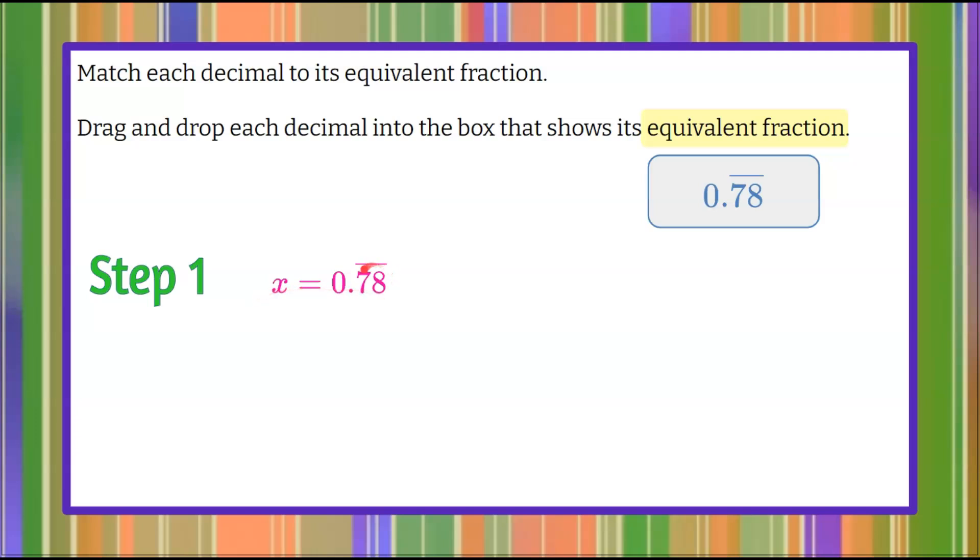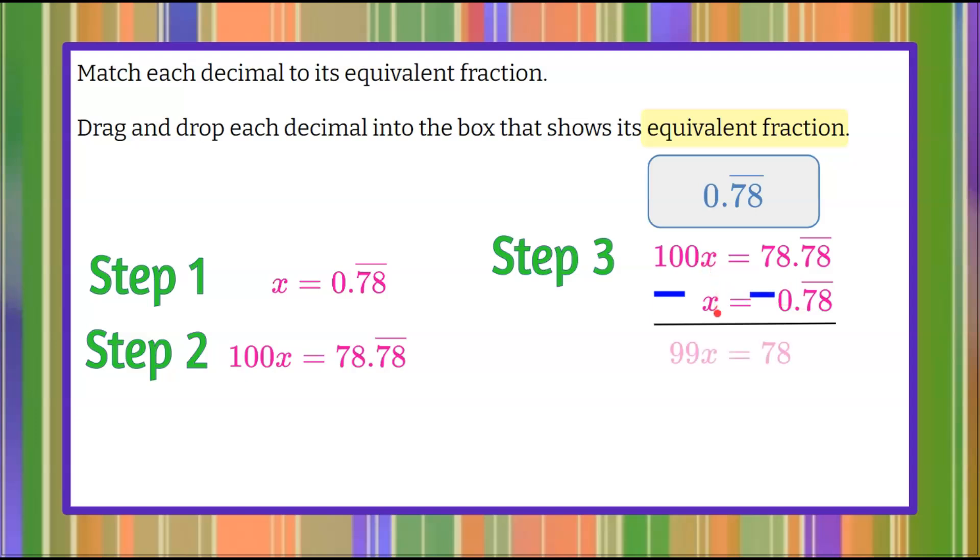Step 2, because two digits repeat, I'm going to multiply both sides by 100. So 100x is equal to 78.78 repeating. 100x equals 78.78. Subtract our x equals 0.78 repeating. When we subtract, 100x subtract x is 99x. Our repeating decimal is eliminated. 78 subtract 0 is 78.